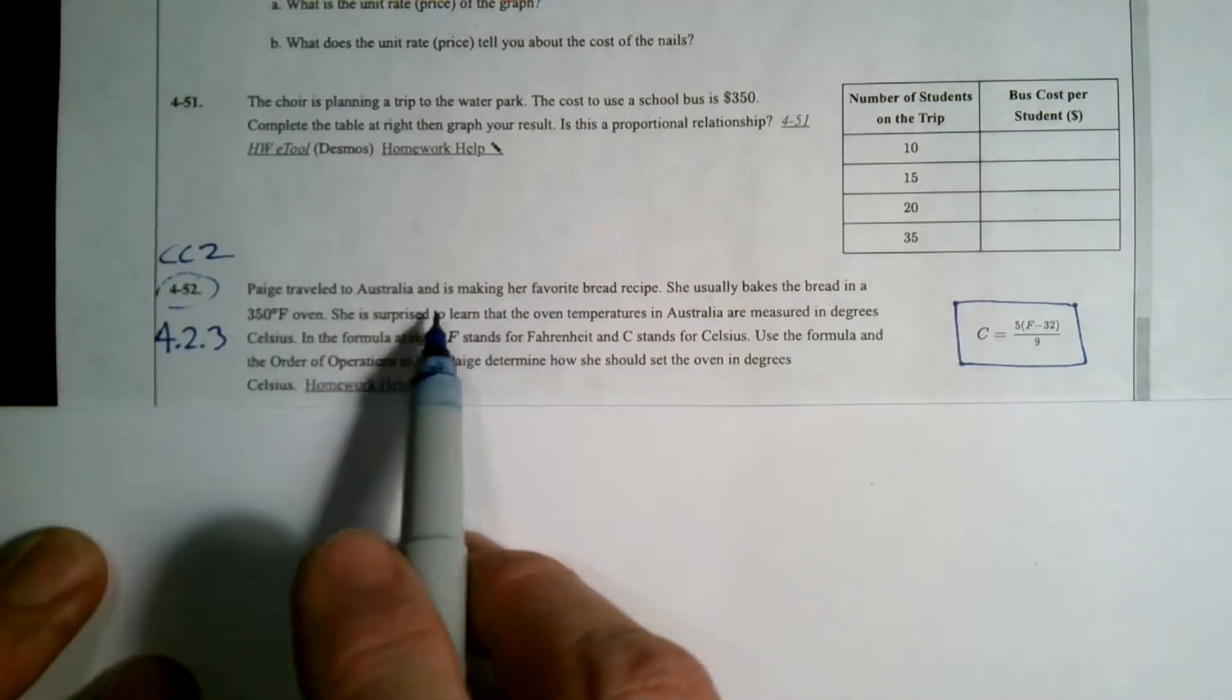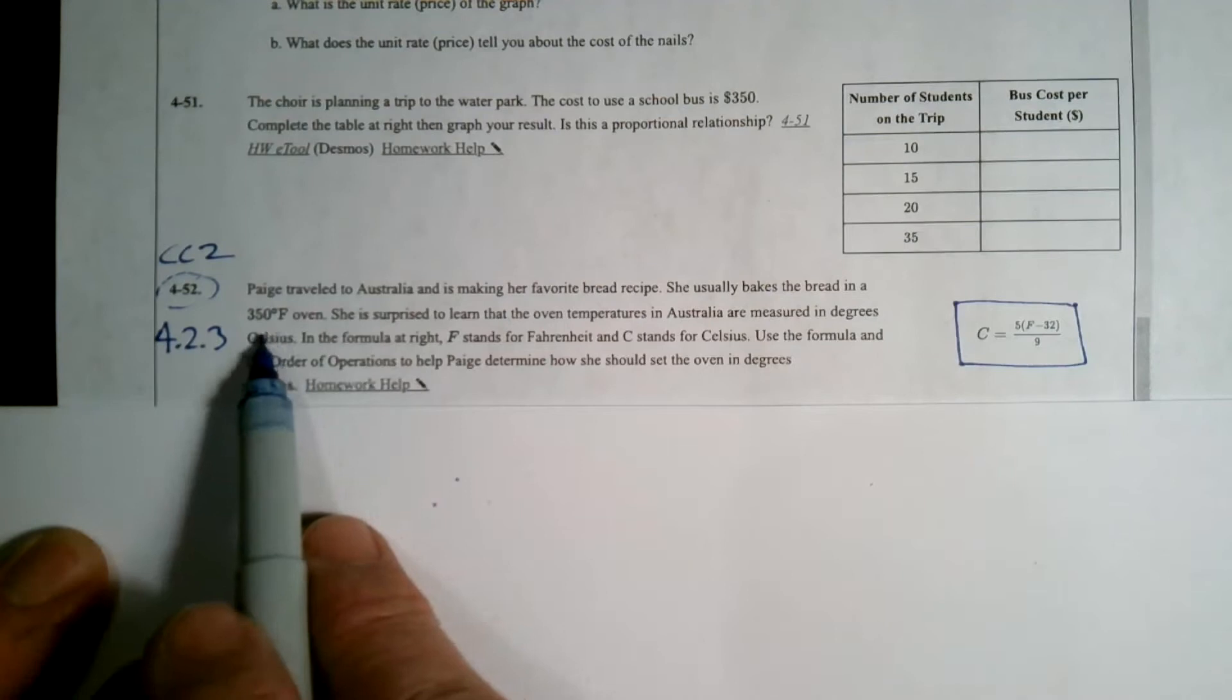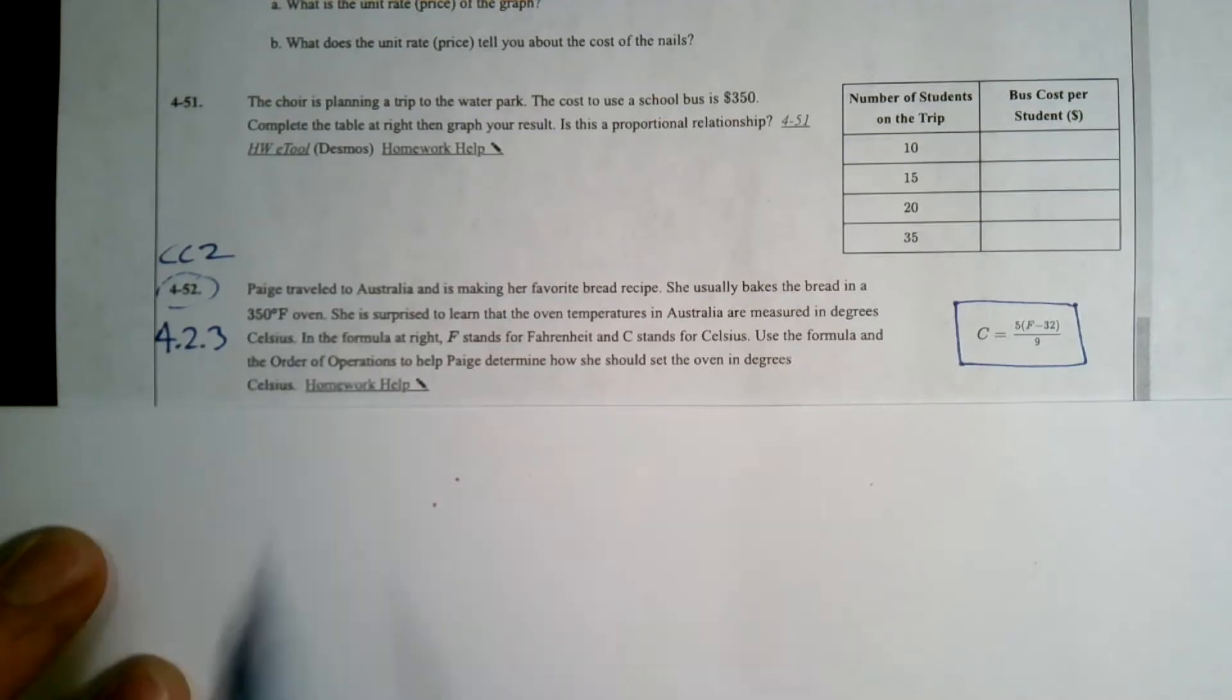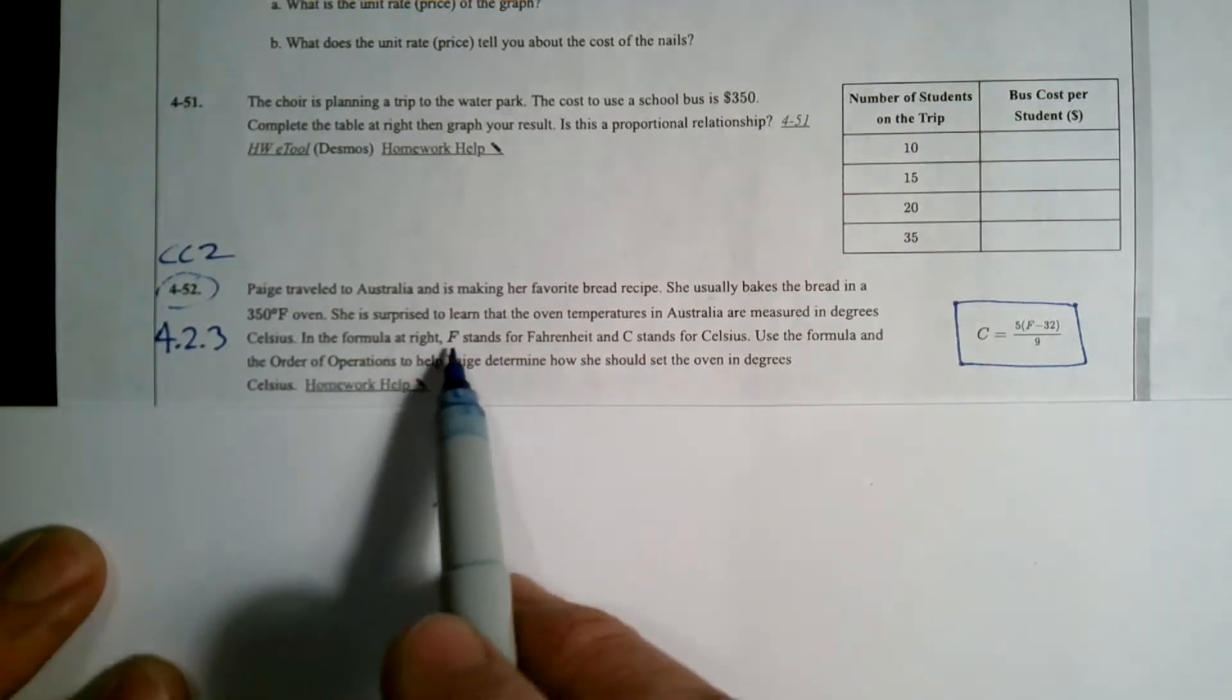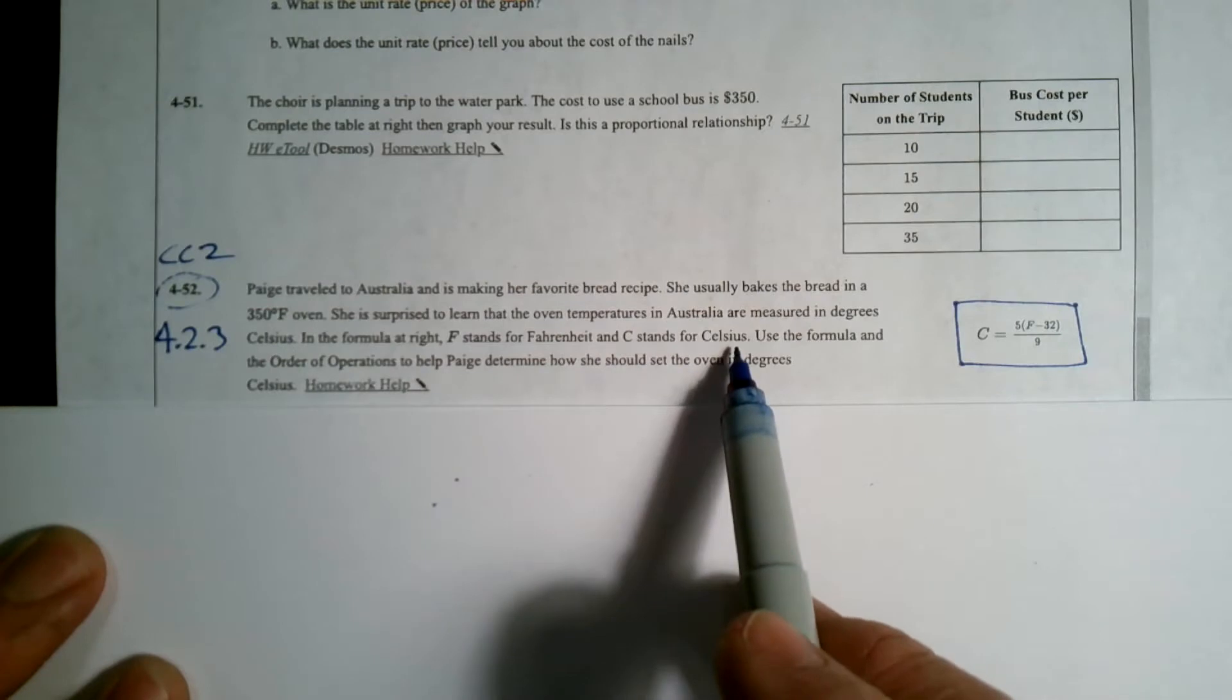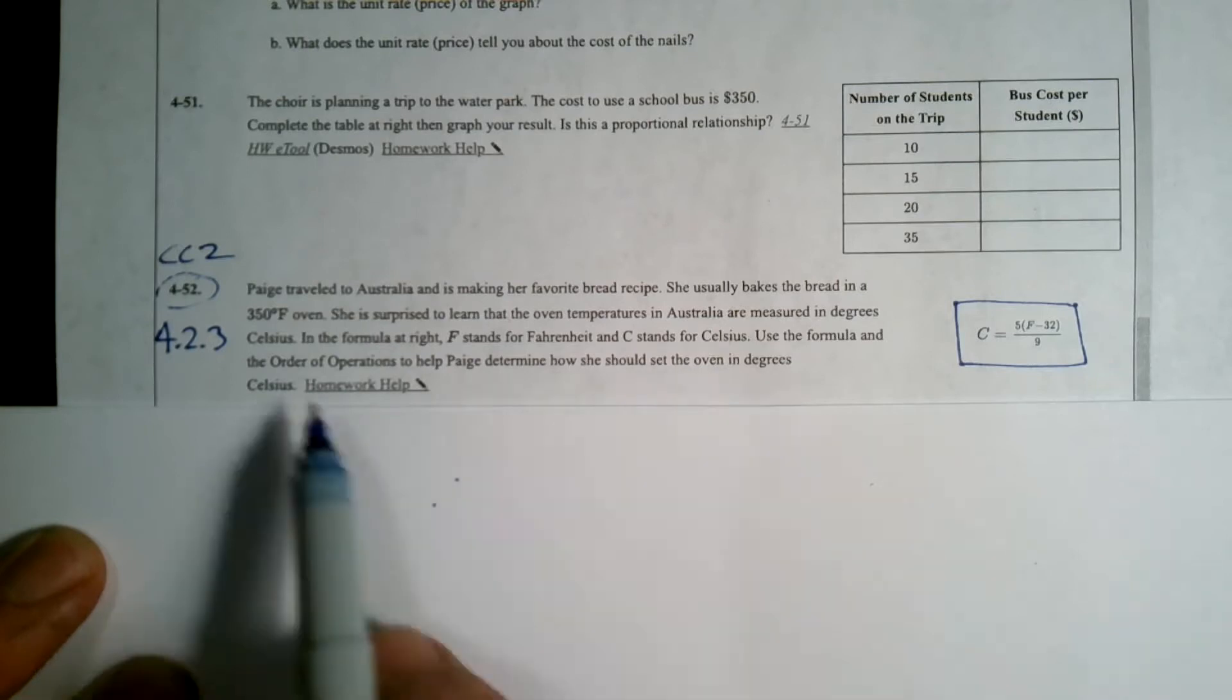So Paige traveled to Australia and is making her favorite bread recipe. She usually bakes the bread in a 350 degree Fahrenheit oven. She is surprised to learn that the oven temperatures in Australia are measured in degrees Celsius instead of degrees Fahrenheit. The formula at the right, F stands for Fahrenheit and C stands for Celsius. Use the formula and the order of operations to help Paige determine how she would set the oven in degrees Celsius.